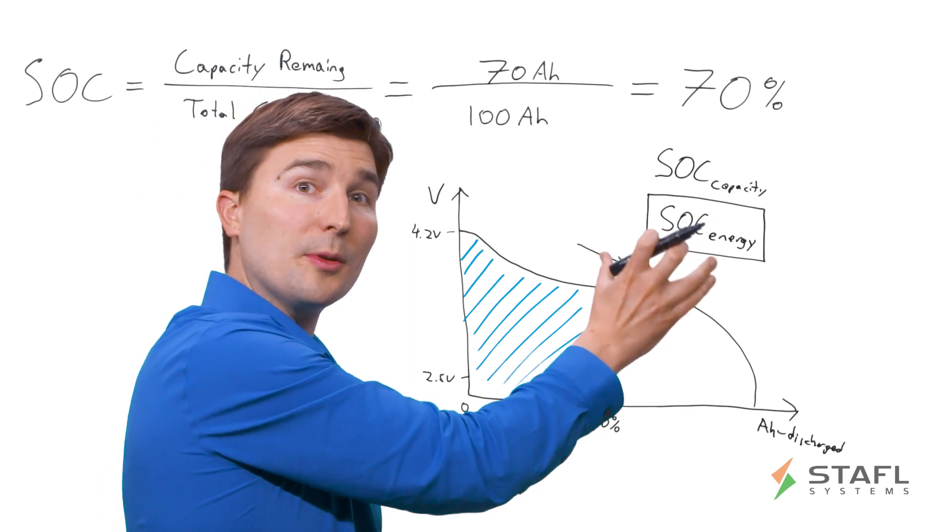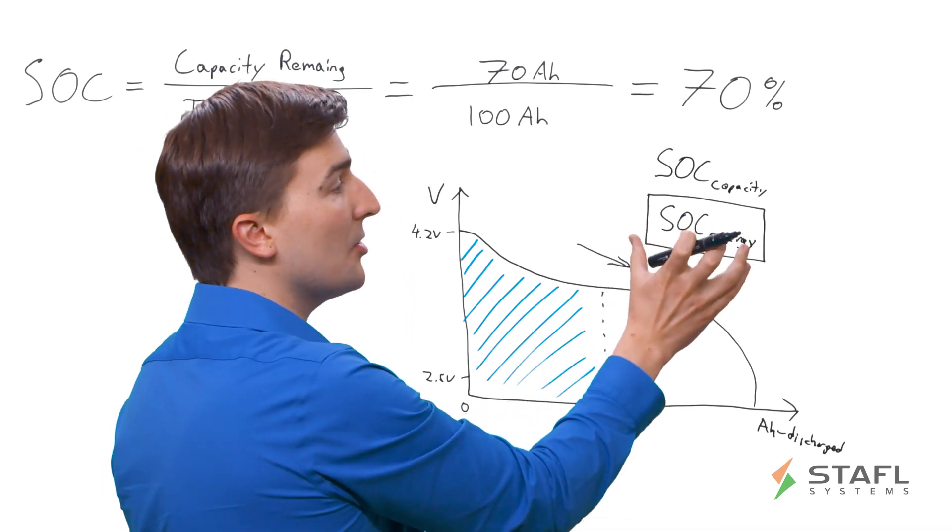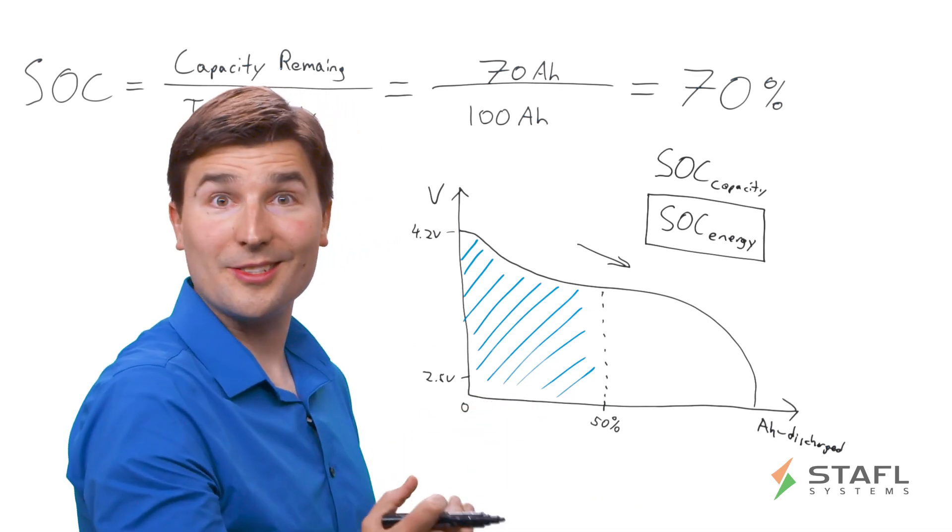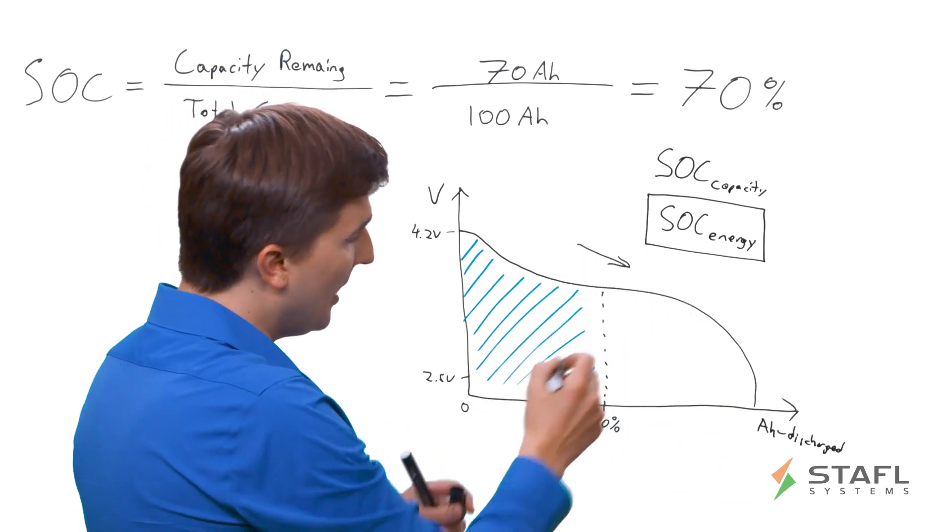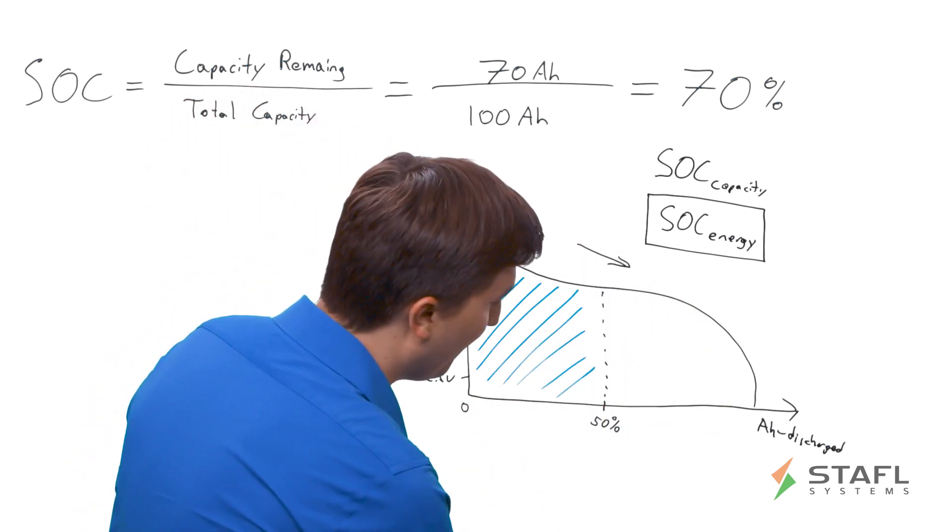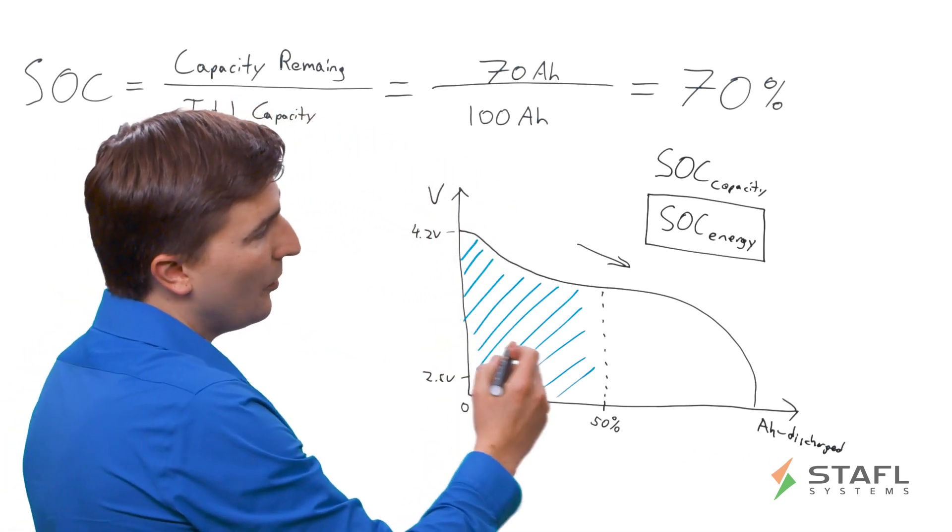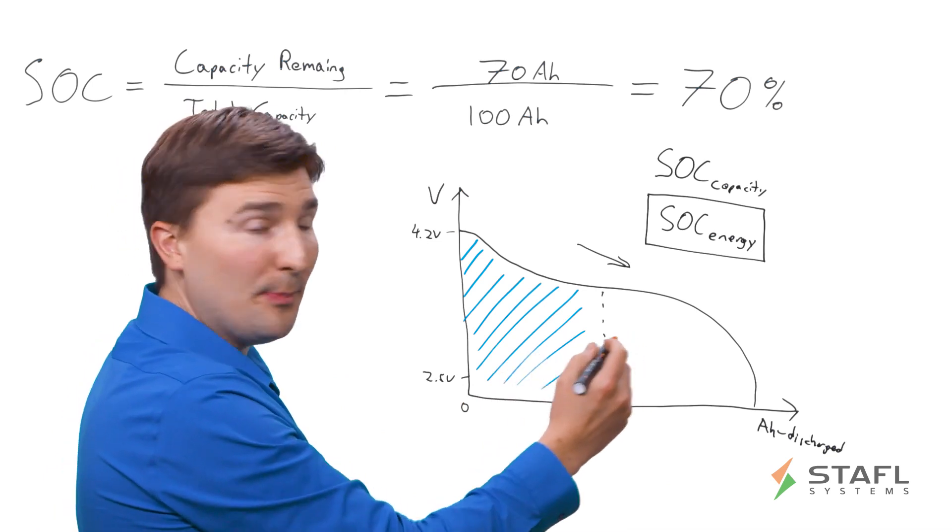And this is actually what most applications are interested in. Because this is actually the more accurate fuel gauge algorithm that tells you how much expected runtime, use, distance, range you have remaining. So let's look at this example again. If we say, okay, where is the actual 50% SOCE point on this?